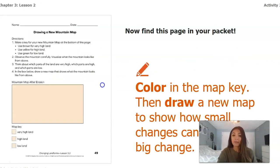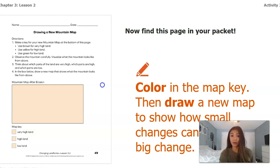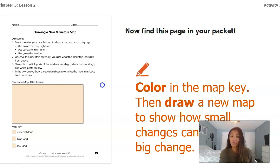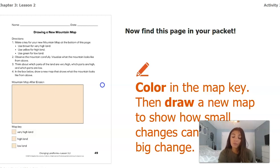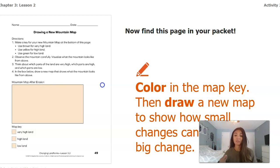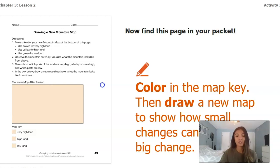In your packet there is a second worksheet that looks very similar to the one we filled out at the beginning of this lesson. You're going to color in the map key using the same colors as the first worksheet. Then you are going to draw a new map to show how small changes can add up to a big change over time. In this box, draw a picture of what you think the mountain would look like after maybe thousands and thousands of years of bits of rock eroding off. Go ahead and pause this video to work on completing this worksheet, then come back to finish up the lesson.